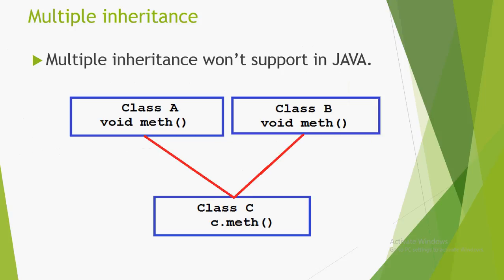Now we will see why multiple inheritance is not supported in Java. Assume class C is a child class that extends two parent classes, class A and class B. If class A has a method called meth, and class B also has the same method, and we create an object for the child class and try to access this method, the Java compiler will get confused as to which method it has to take. However, in the case of interfaces, multiple inheritance is supported because interfaces only contain declarations with no implementation.